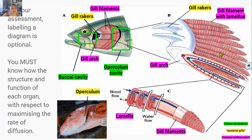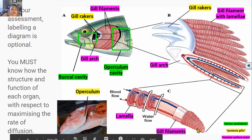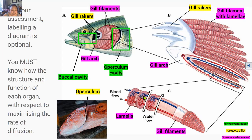Gill filaments are delicate, bright red, long thin structures that project out from the gill arches — they kind of look like a comb or feathers. They're bright red because they contain lots of blood-carrying blood vessels, and each filament is highly folded. These thin folds of the gill filament are called the lamellae, which are very thin and contain tiny blood vessels called capillaries. Lamellae are very important because they're the specialized respiratory surface of the gill system — this is where gas exchange occurs.